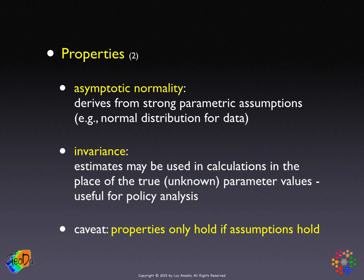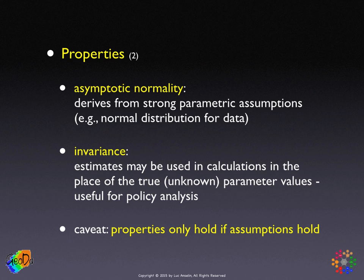The big caveat is that this is only as good as the assumptions. If we assume normality — which implies symmetry — but our data are highly skewed, we will be in trouble. That's why there are many specification tests in the maximum likelihood environment to verify that the assumptions hold. Modern econometrics has reduced the need for strong parametric assumptions, obtaining normality from much more general central limit theorems.